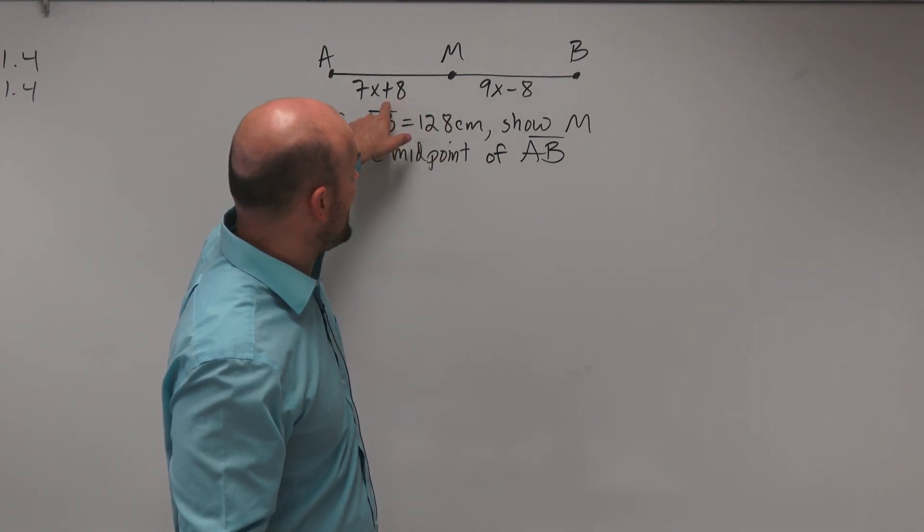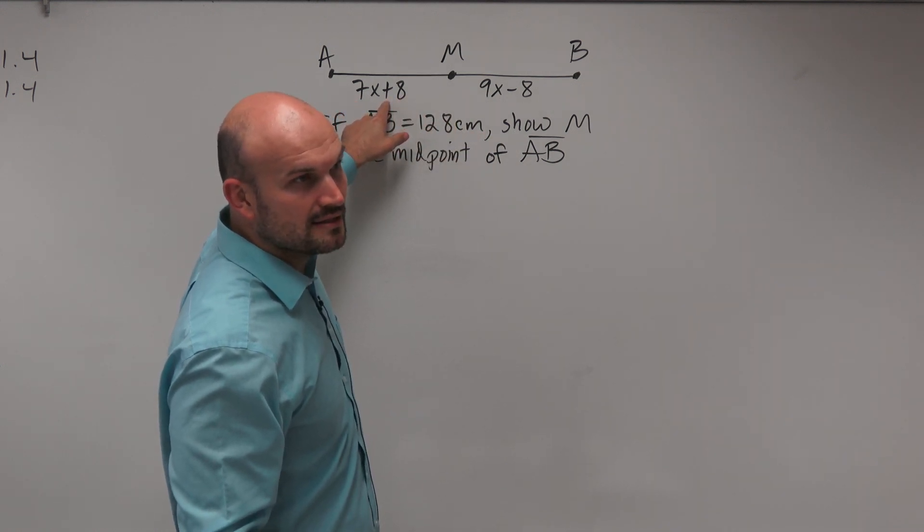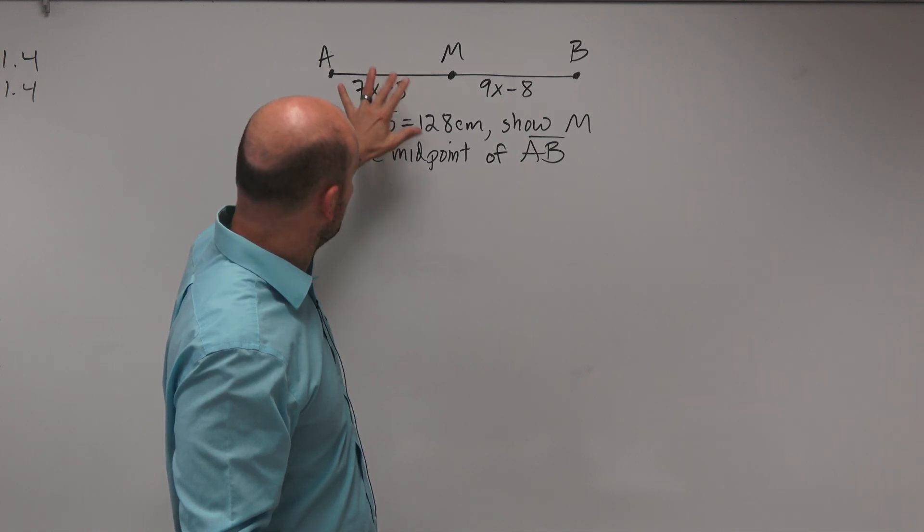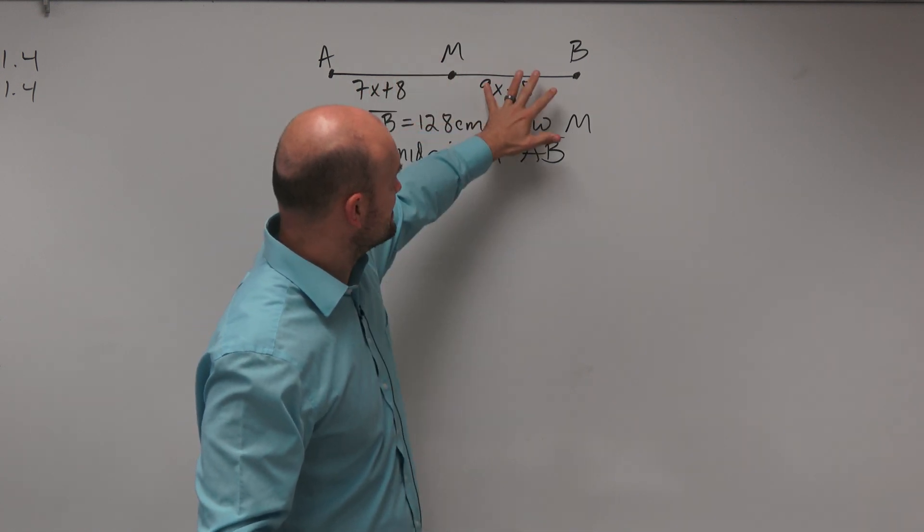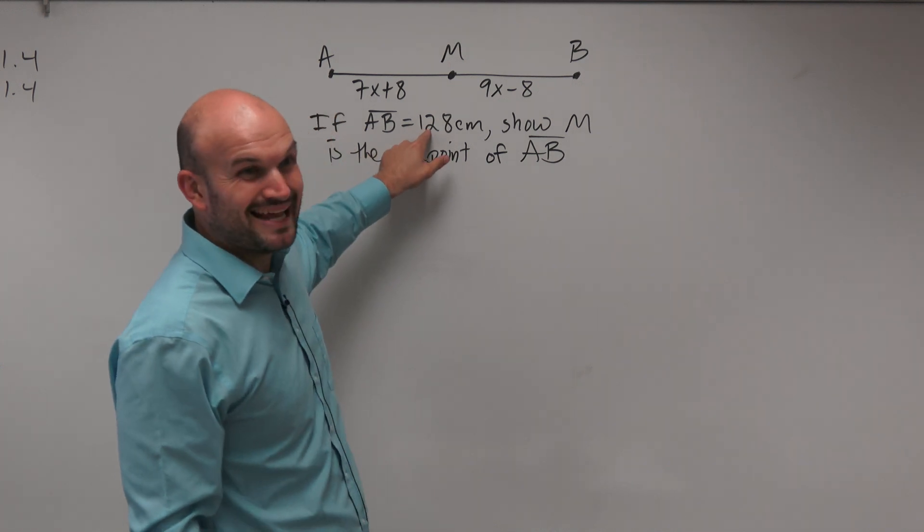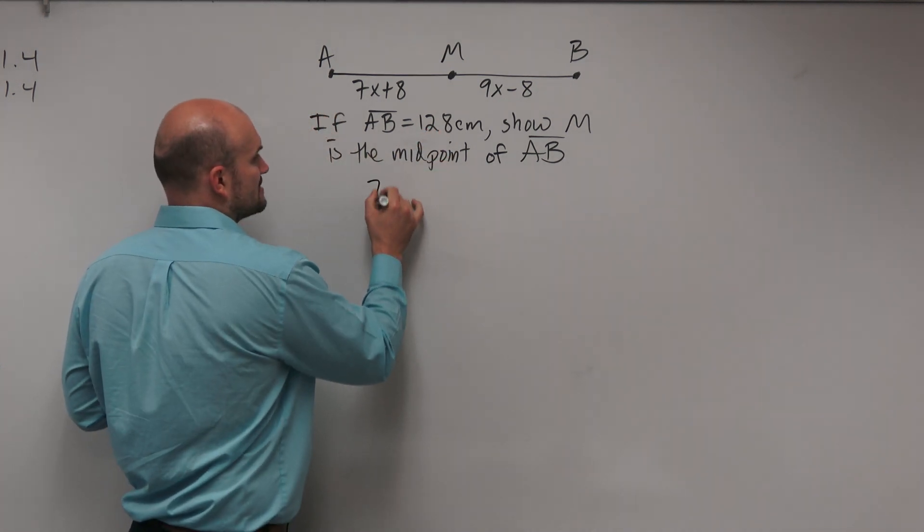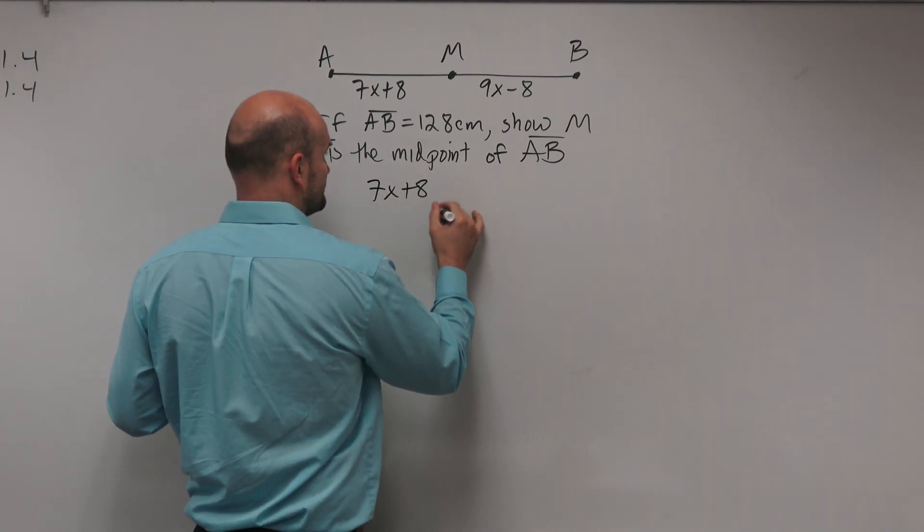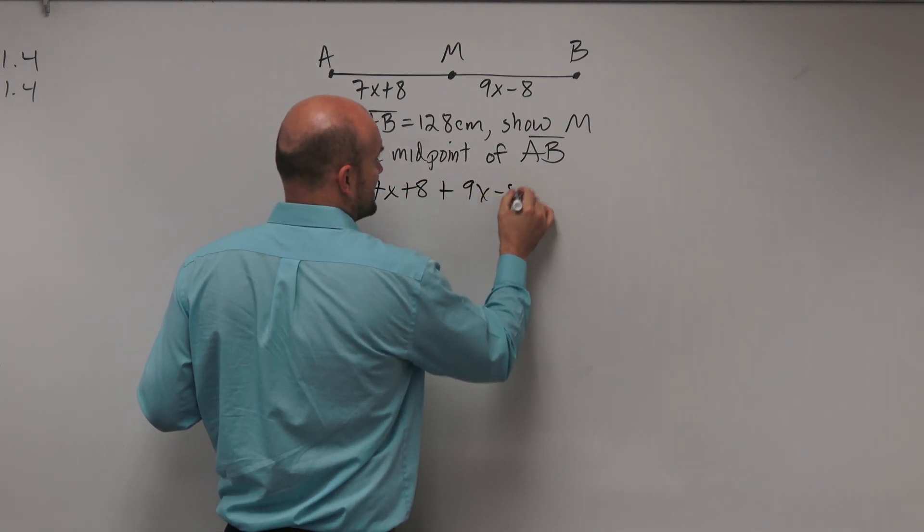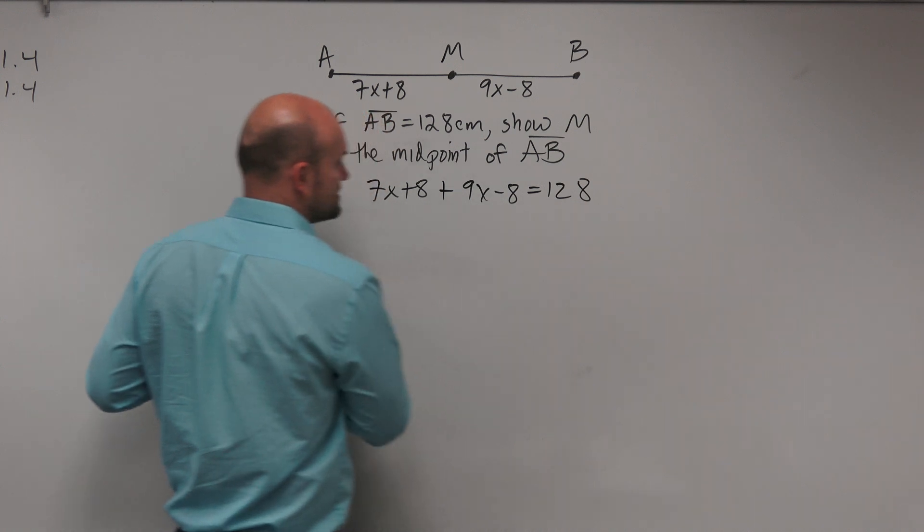We don't have enough to solve for x yet. We know that AM plus MB equals AB. Since AB is 128, we can use the segment addition postulate: 7x plus 8 plus 9x minus 8 equals 128 centimeters.